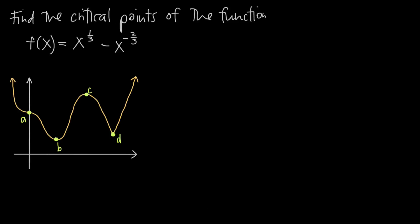The way you're always going to go about finding critical points is to start with the original function f of x. In order to find critical points, your first step is to take the derivative of this function, which we'll call f prime of x. Taking the derivative is about applying the derivative rules based on the kind of function you have. In this case, we're going to use the power rule because we've got power functions.